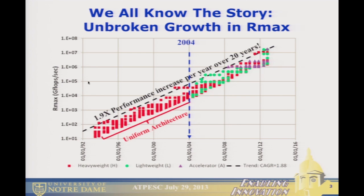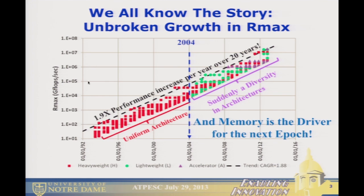What's important about this chart is that something interesting happened in 2004. Before that, we had a very uniform architecture — what we started calling heavyweight architectures in the Exascale report. After that, we had a diversity of architectures. And looking at the next step of evolution, it's my feeling that memory is going to be the driver for the diversity we see further on.